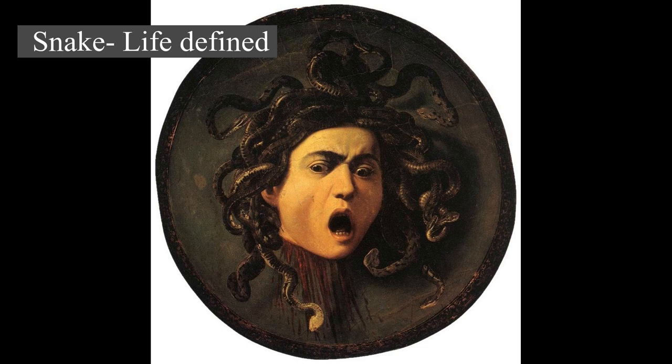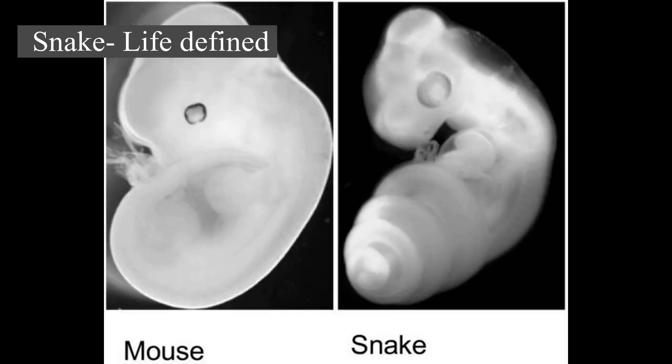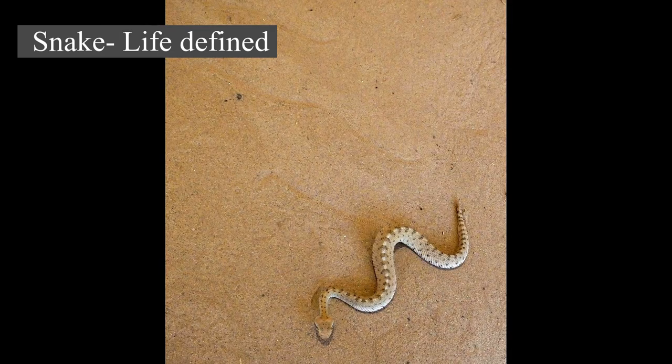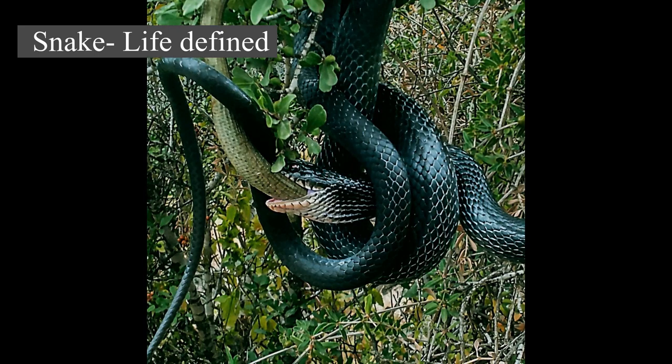Snakes are thought to have evolved from either burrowing or aquatic lizards, perhaps during the Jurassic period, with the earliest known fossils dating to between 143 and 167 million years ago. The diversity of modern snakes appeared during the Paleocene epoch, approximately 66 to 56 million years ago, after the Cretaceous-Paleogene extinction event. The oldest preserved descriptions of snakes can be found in the Brooklyn Papyrus. Most species are non-venomous; those with venom use it primarily to kill prey rather than for self-defense. Non-venomous snakes either swallow prey alive or kill by constriction.